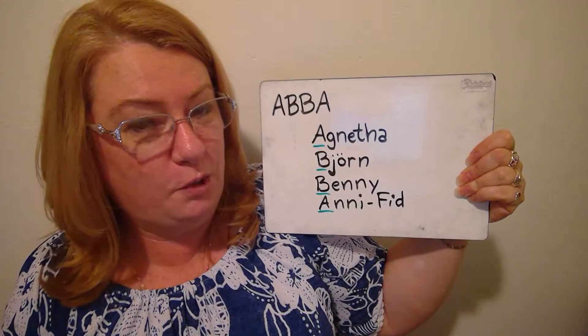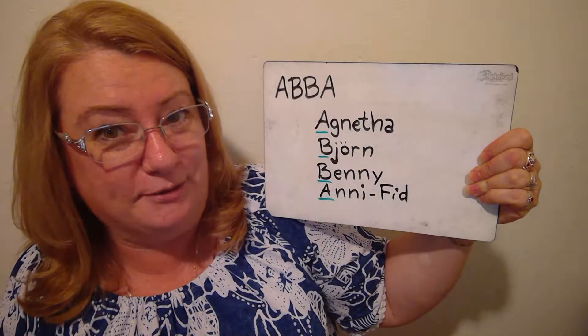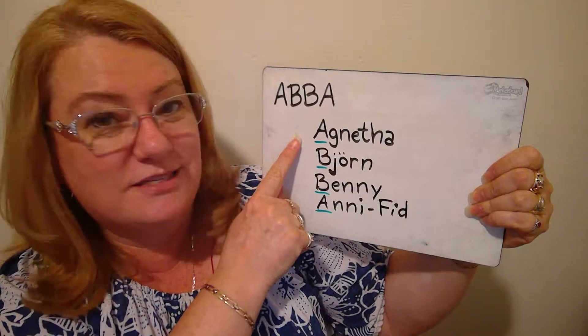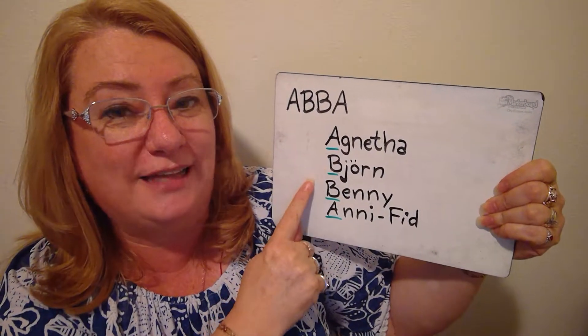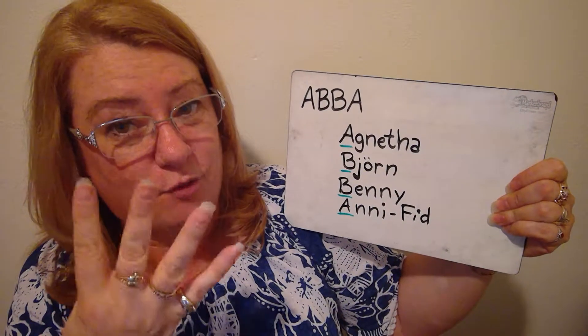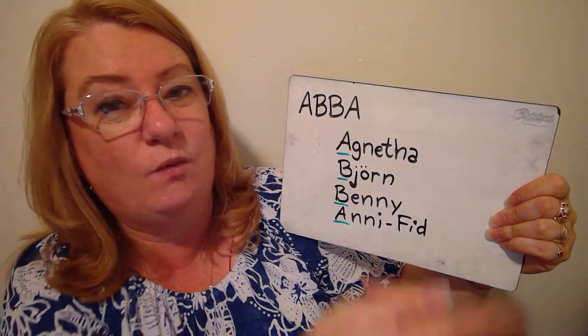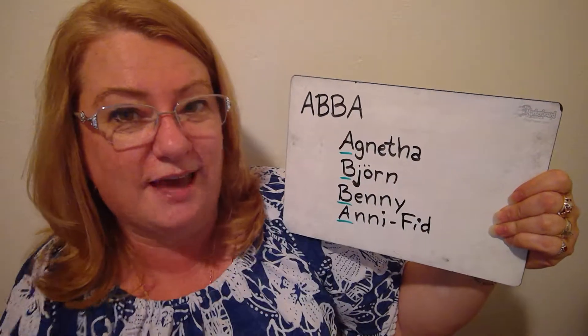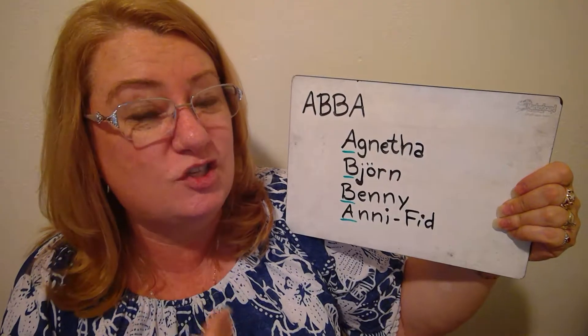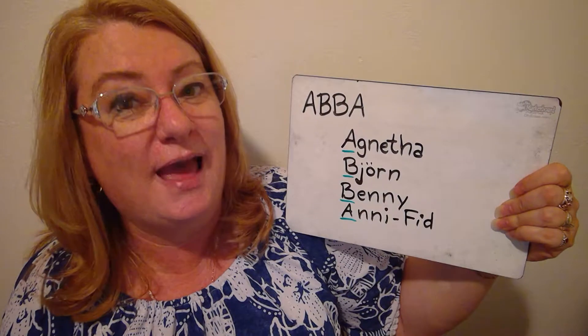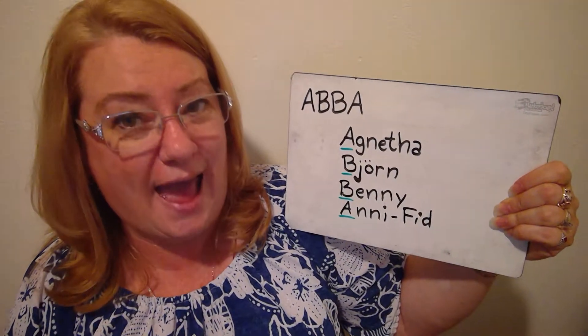Let's look at four examples. The first one is a popular music group called ABBA. Each letter represents the first letter of each name of the four people of the group. So we've got A, B, B, A, and when we put them together as an acronym, it's pronounced as a new word — that's the important part. It's pronounced as a new word: ABBA.